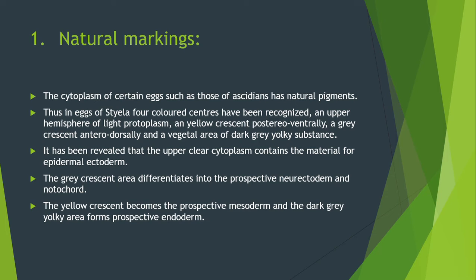The cytoplasm of certain eggs, such as those of ascidians, has natural pigments. In eggs of Styela, four colored pigment centers have been recognized: an upper hemisphere of light protoplasm, a yellow crescent posteroventrally, a gray crescent posterodorsally, and a vegetal area of dark gray. The upper clear cytoplasm contains material for epidermal ectoderm, the gray crescent differentiates into prospective neuroectoderm and notochord, the yellow crescent becomes the prospective mesoderm, and the dark gray area forms prospective endoderm.